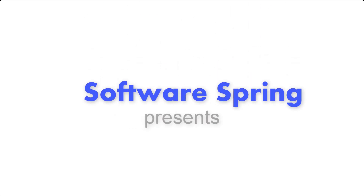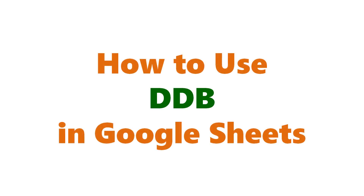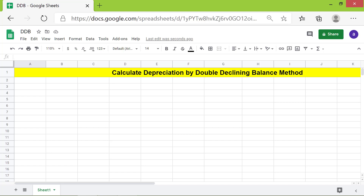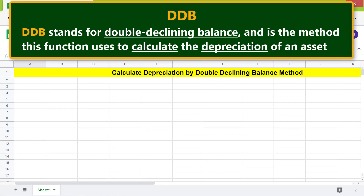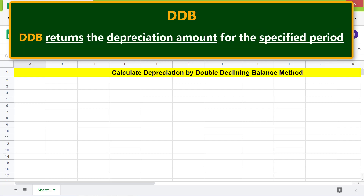Welcome to the tutorial on the DDB function. DDB stands for Double Declining Balance and is the method this function uses to calculate the depreciation of an asset. DDB returns the depreciation amount for the specified period.